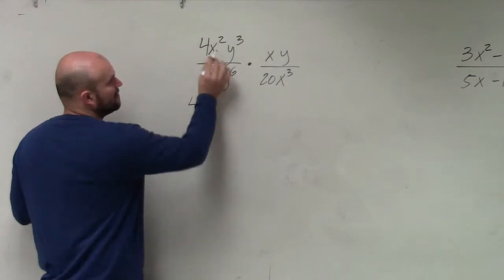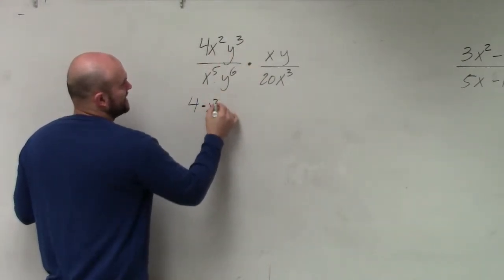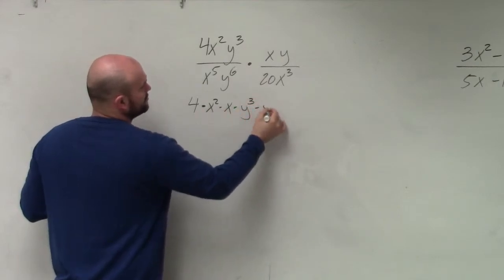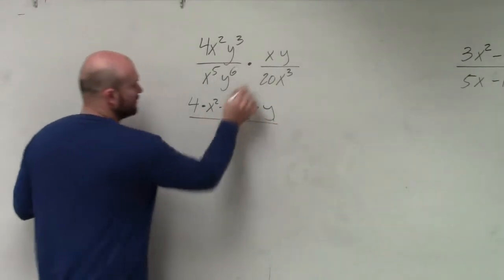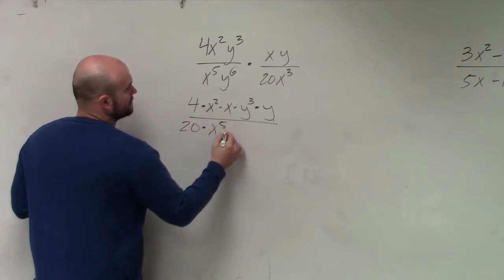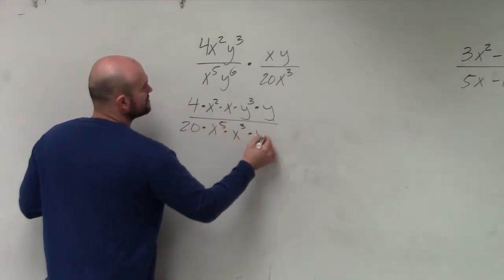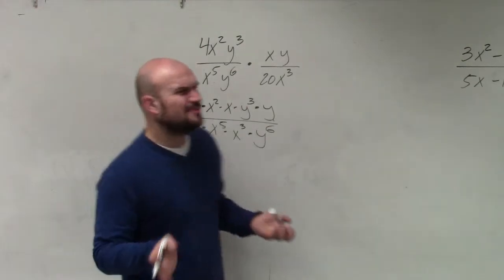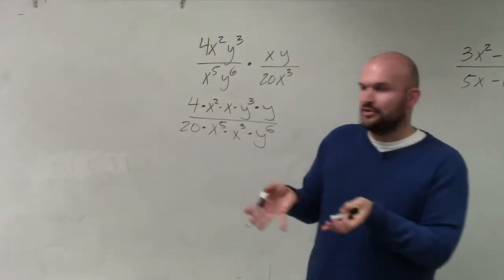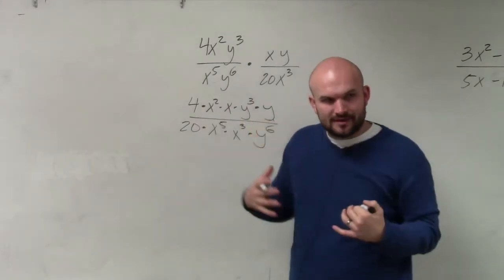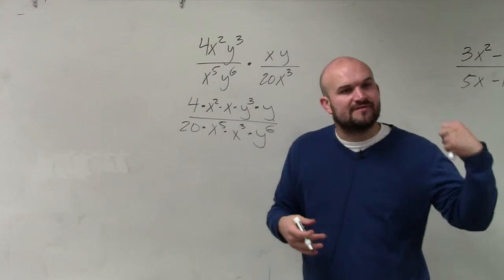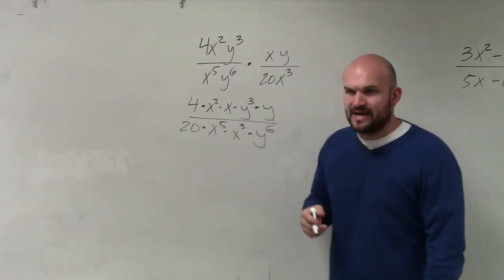So I just have 4, then I'm going to do the x's — x squared times x — then I'll do the y's — y cubed times y — all over 20 times x to the fifth times x cubed times y to the sixth. I think it's helpful to get the numbers, the x's, and the y's together, because I can apply the rules of exponents when they have the same base.